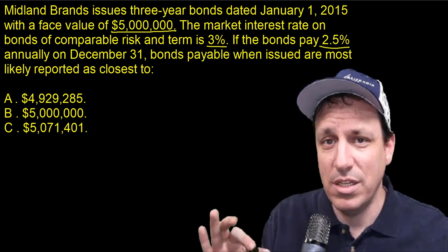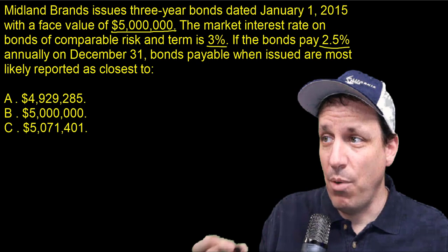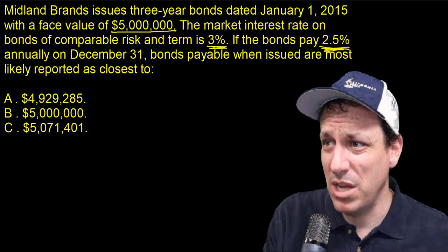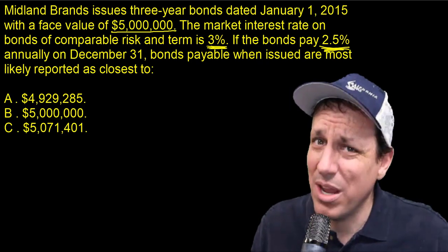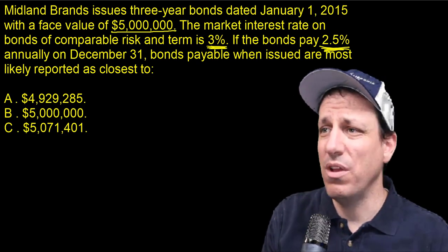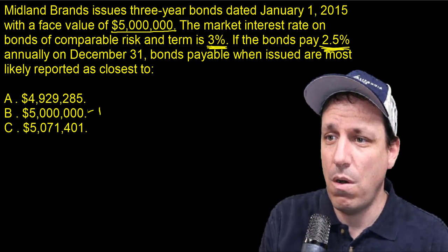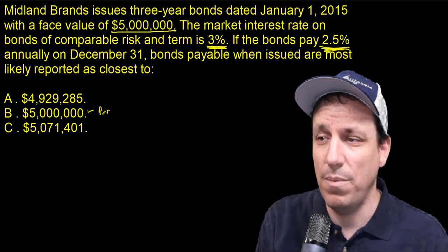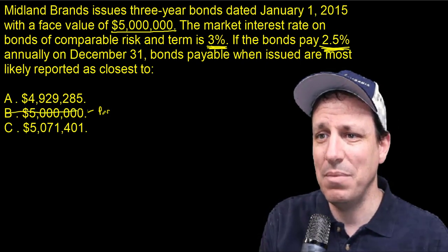This is the key thing — they're trying to see if you understand bonds issued at premium, discount, or par. We have a bond paying 2.5%, but the market demands 3%. You're paying less than what the market requires. Par is when the market rate equals the bond coupon payment rate, so we know it's not going to be issued at par — we can eliminate that.